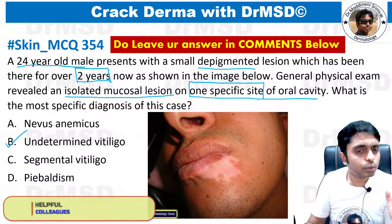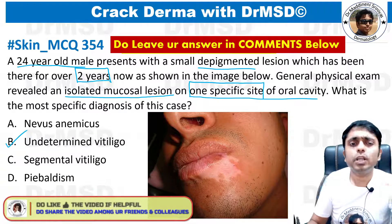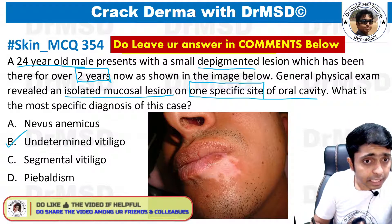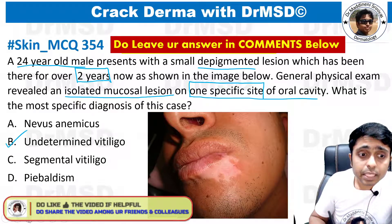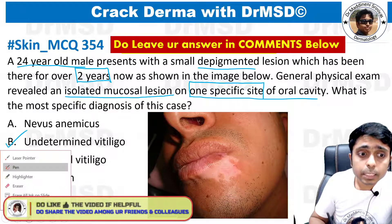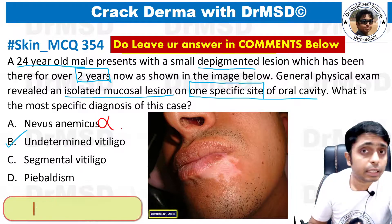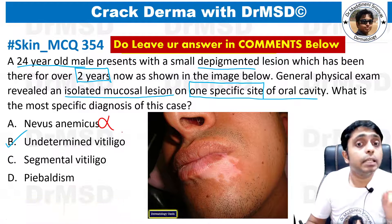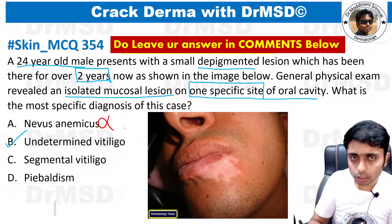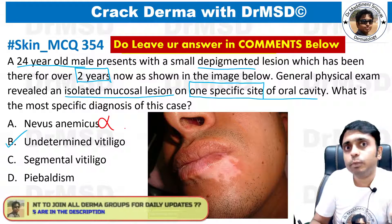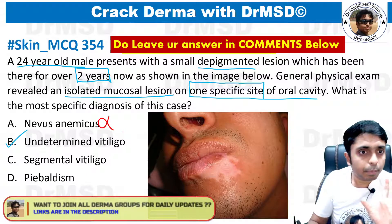With these clues you should be able to rule out the options. It is not nevus anemicus — because in nevus anemicus, hypopigmented lesions will not involve the mucosa. There will not be an association with a mucosal hypopigmented lesion.